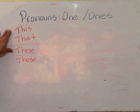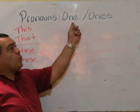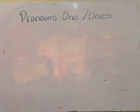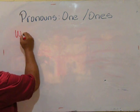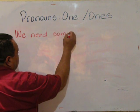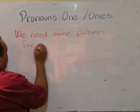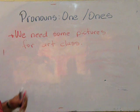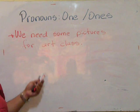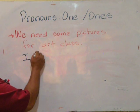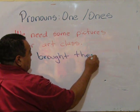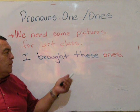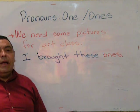As I said, these determiners are well tied up to these pronouns. You can use them — actually, you have to use them at the same time. For example, the teacher says we need some pictures for our class, and you can say: I brought these ones. 'These' brought more than one. So you see how the determiner goes hand in hand with the pronoun.